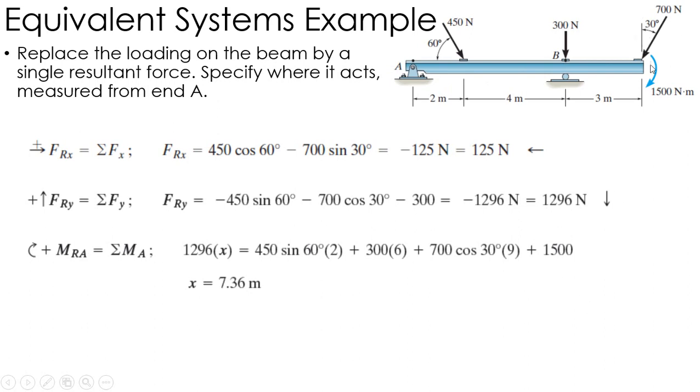Then I also have my couple moment to find the total couple moment. I throw that 1,500. Now, that's a free vector, so its location doesn't matter. I just add that in because it acts basically everywhere on the beam. So this is the resultant moment if I was going to move as I move all of those forces to point A. So 2 times the 450, 6 times 300, 9 times the 700, and then that couple moment.